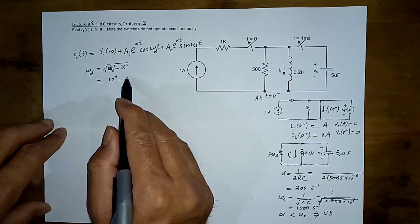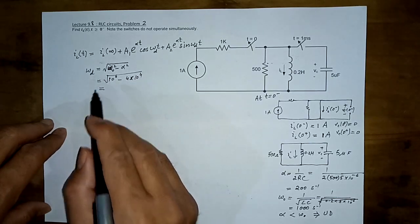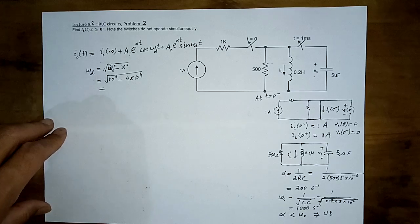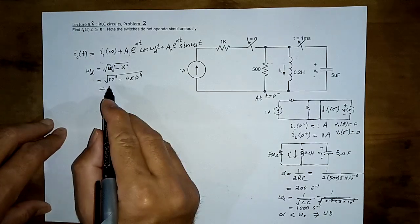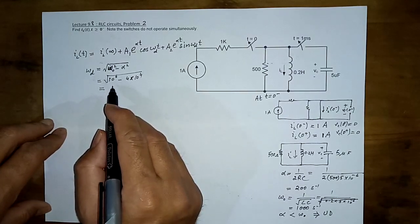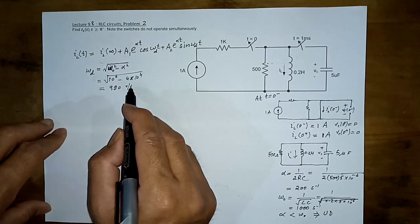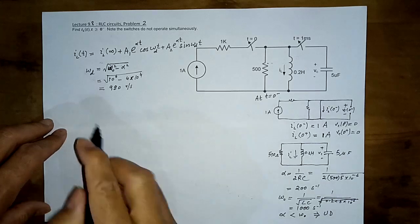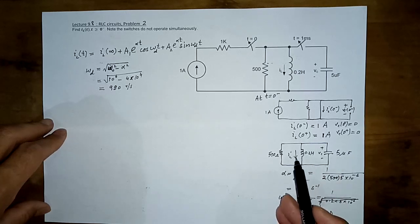Computing ωd: we get √(10⁶ − 4×10⁴) = √(1,000,000 − 40,000) = √960,000 ≈ 979.79, which we round to 980 radians per second. IL at infinity is 0, because with no source all energy dissipates in the resistor — the inductor eventually looks like a short and capacitor like an open, so IL(∞) = 0.